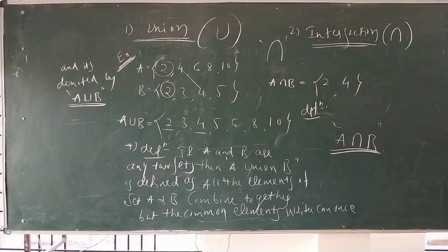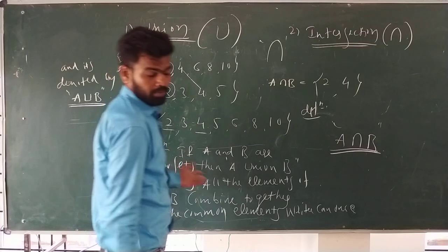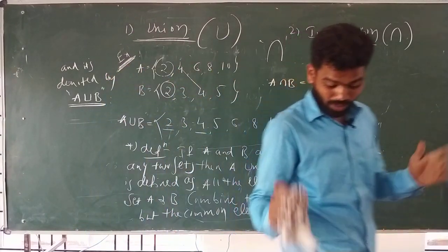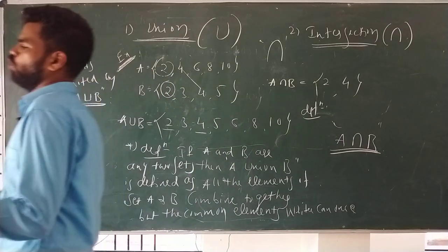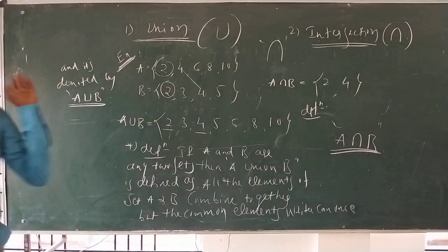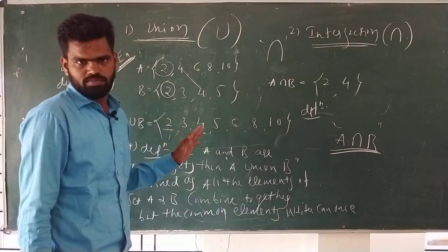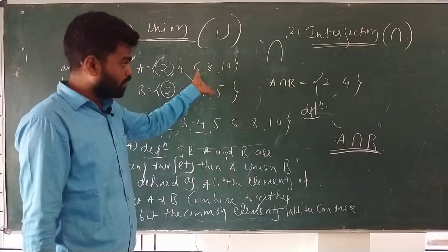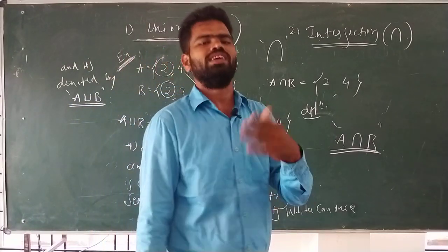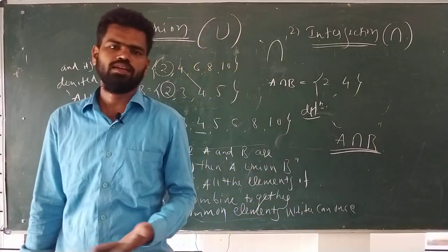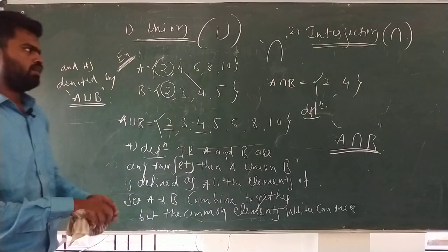To summarize: union means combining of two sets — A and B are joined together, but common elements are written once. Intersection means taking only the common elements of set A and set B. That is called intersection.